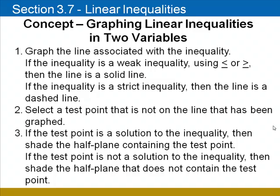We'll select a test point that's not on the line, and we'll substitute the coordinates for x and y in the original inequality. If the test point is a solution, we'll shade the half plane that contains the test point. If it's not a solution, we'll shade the opposite side.